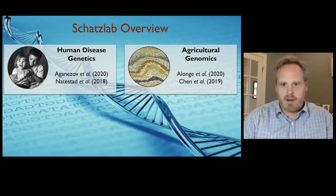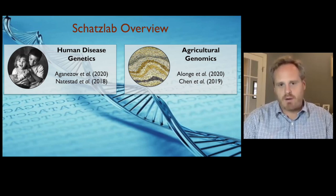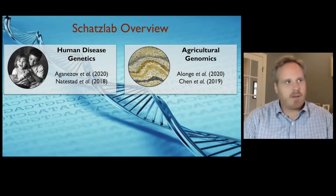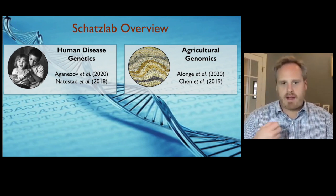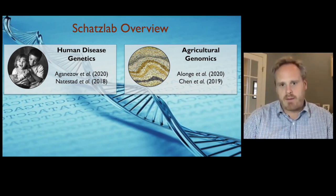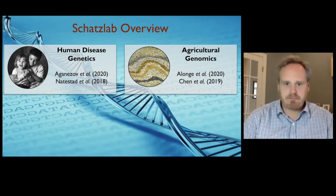On the agricultural side, we think a lot about how we're going to feed the world. We look at major crop species like rice, corn, and wheat, and think about how their different genomes impact how well they grow, how they can live in different environments, and how we can increase their yields for many years to come.